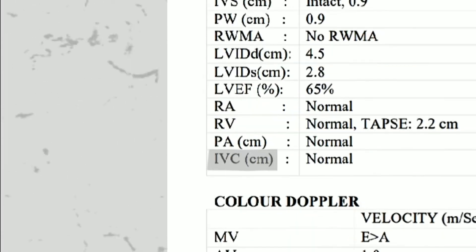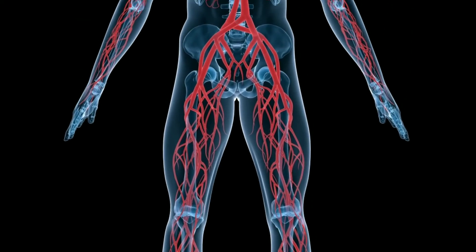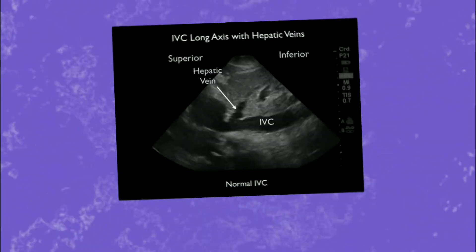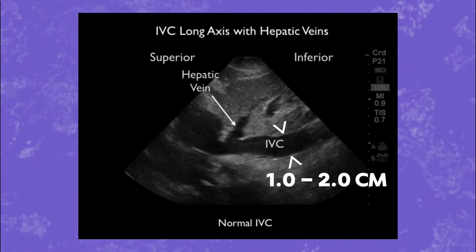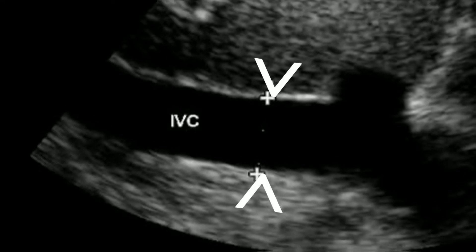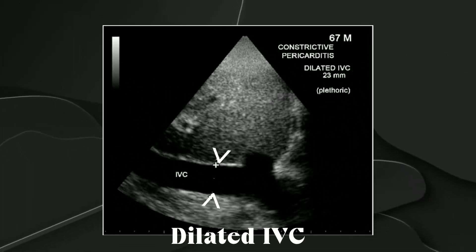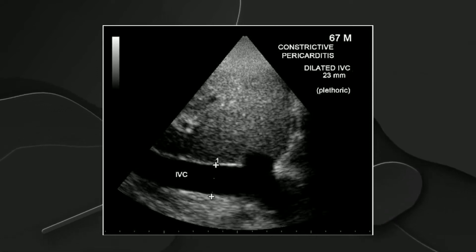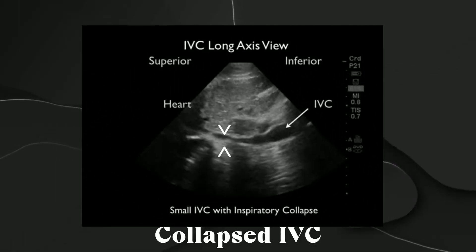Next is IVC — inferior vena cava. The inferior vena cava brings blood from the lower half of the body to the heart. The normal size of the inferior vena cava is between 1 to 2 cm. An increase in the size of the IVC is called dilated IVC, which suggests too much fluid in the body, which happens in conditions like heart failure. A collapsed IVC suggests dehydration, and the patient needs fluid replacement.